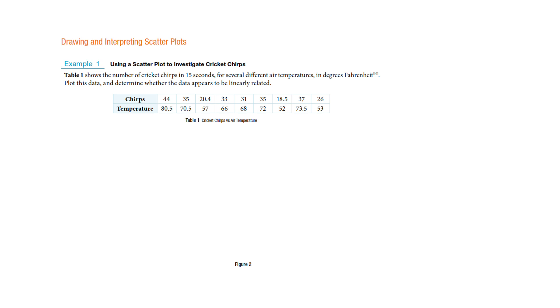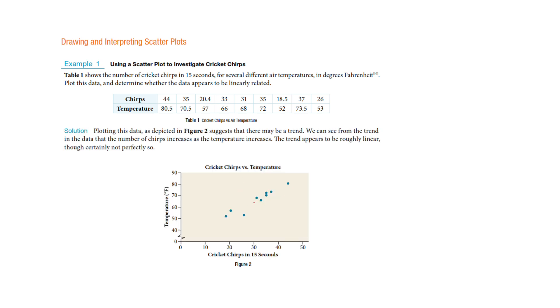They graphed it as if they think, okay, chirps in temperature. And what they have created is something with all of these dots. Now where we're going with this is that it appears as if there's some kind of linear pattern here. It looks like a line. Now it's not perfect, but there's something that resembles a line.